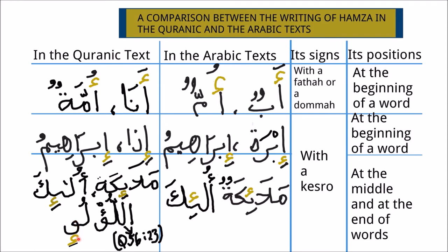In conclusion, in the normal Arabic script, only the initial Hamza has two positions: above the Alif when it takes a Fatha or a Damma, and below the Alif when it takes Kasra. But in the Quranic text, wherever Hamza comes in a word, it is written below an Alif, a Waw, or a Ya, once it takes a Kasra. Subhanaka Allahumma wa bihamdika.